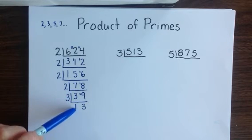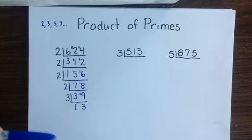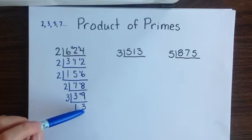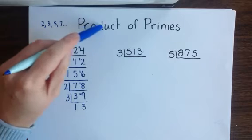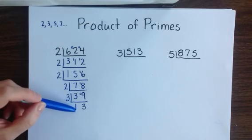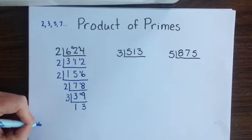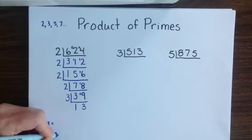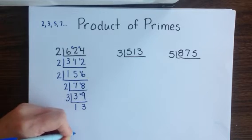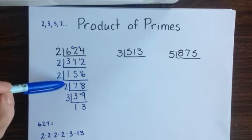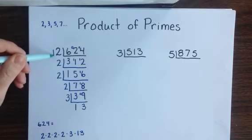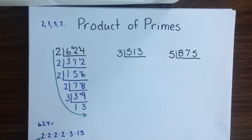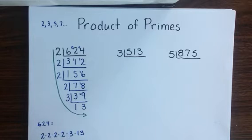I'm now left with a quotient of 13, and 13 is a prime number, meaning that none of our other primes are going to fit evenly into it, since the only numbers that 13 is divisible by are 1 and itself. That makes our product of primes for 624: 2 × 2 × 2 × 2 × 3 × 13, getting those answers from the outside column of division. If I multiplied 2 × 2 × 2 × 2 × 3 × 13 back together, it would give a product of 624.